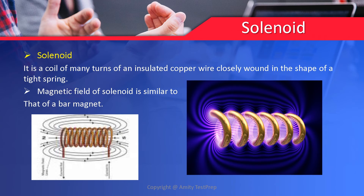One more important question from this topic: how can the strength of a solenoid's magnetic field be altered? First, when we increase the number of turns of a solenoid, it ultimately increases the magnetic field. Second, by keeping the turns very close to each other, we can increase the magnetic field strength. Third, when we change the polarity of the battery connected to a solenoid, the direction of the magnetic field will be reversed. That is all from the solenoid topic for your coming exams.